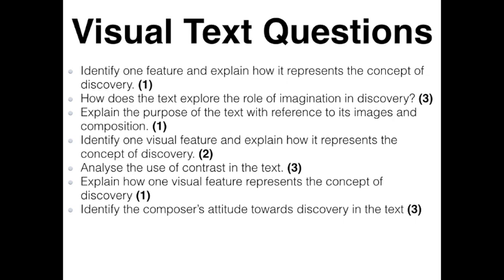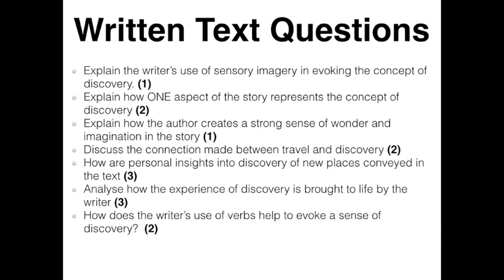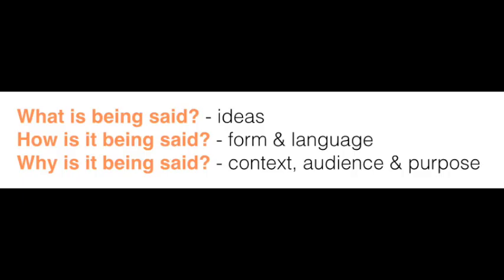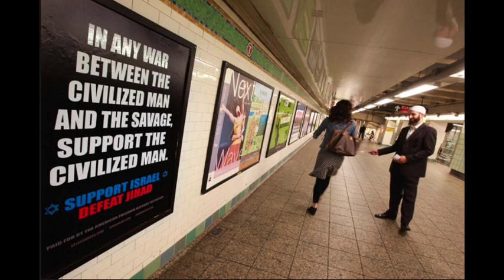I've suggested that you create your own questions; however, I've also supplied some sample questions on visual text, written text and poetry. You'll notice that these questions often start with what, how or why. 'What' questions are asking you about the ideas. 'How' questions are asking you about the form and language. And 'why' questions are asking you about context, audience and purpose. Obviously, you need to know this if you're going to do well in the exam. You don't need to be in a library in order to analyse a text.